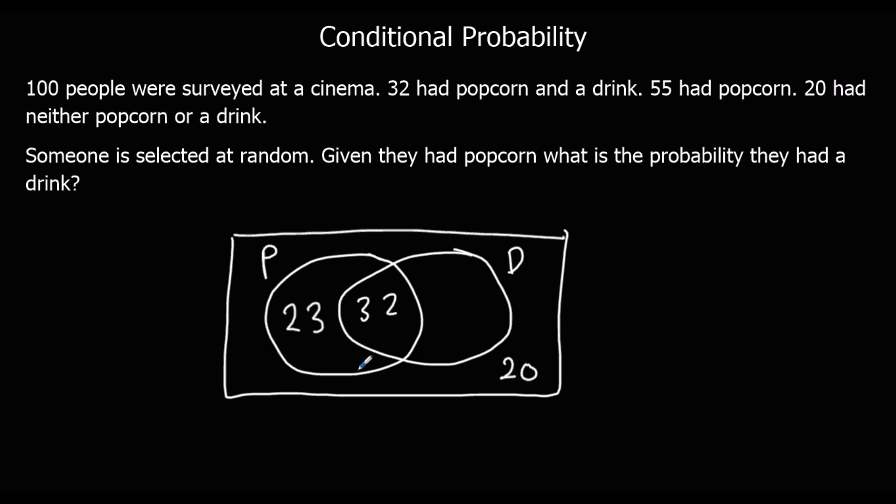So we've got 55, 75. How many more? 25 more people. That makes 100 people in total. Now the question says, given they had popcorn.